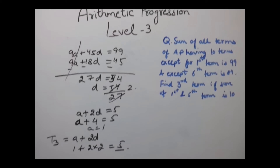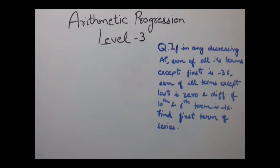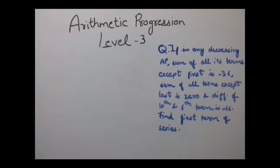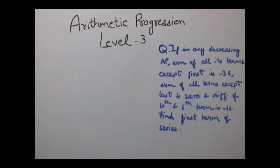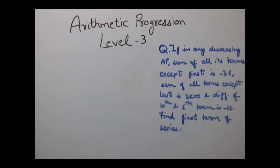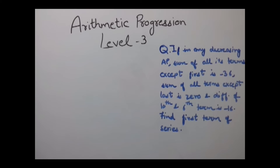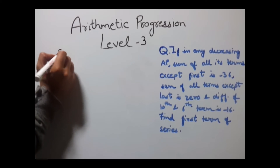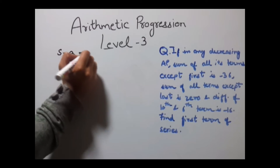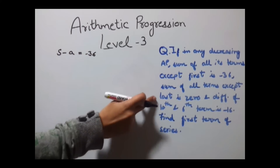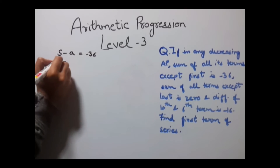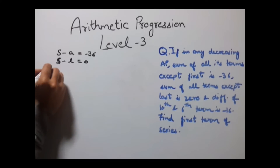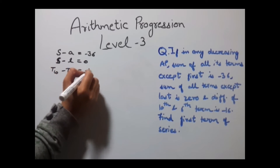Now another example: if in a decreasing AP, the sum of all its terms except the first is −36, the sum of all terms except the last is 0, and the difference of the 10th and 6th terms is −16, find the first term. Let S be the total sum. So: S − a = −36, S − l = 0, and T10 − T6 = −16.